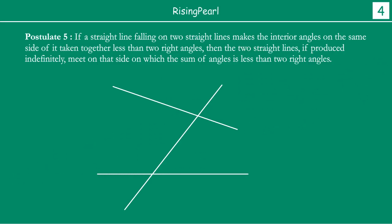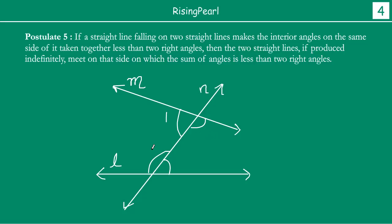This is a much cleaner version. If you draw straight lines like this in our example, this looks a lot better. It is basically the same thing. In this case, you have line L, line M, and intersecting line N. Your interior angles in this case are: angle 1, angle 2, angle 3, and angle 4. We notice that angle 3 plus angle 4 — these two interior angles on the same side — is actually less than 180 degrees if you measure them.